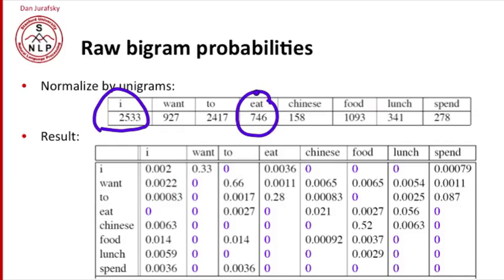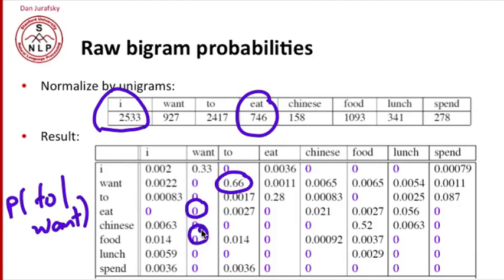So here's the count of I, it's 2533. Here's the count of eat, it's 746. And using the equation, we can now compute the bigram probability, the probability, for example, of to given want. How likely, given that the previous word was want, that the next word is to. It's pretty likely, 0.66. But notice that things with counts of zero still have probabilities of zero.